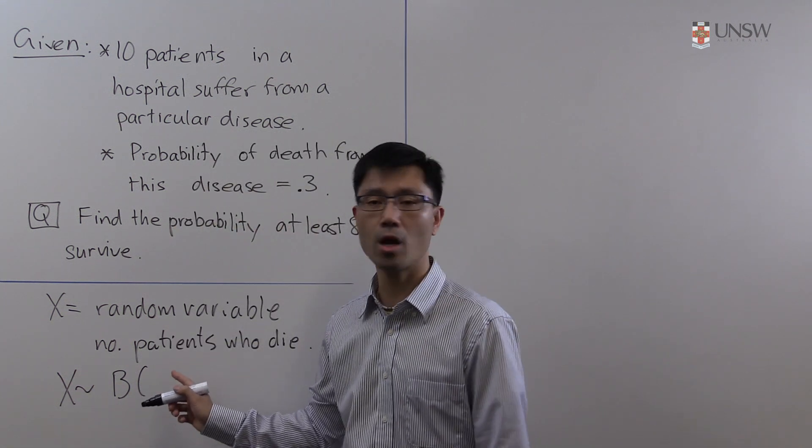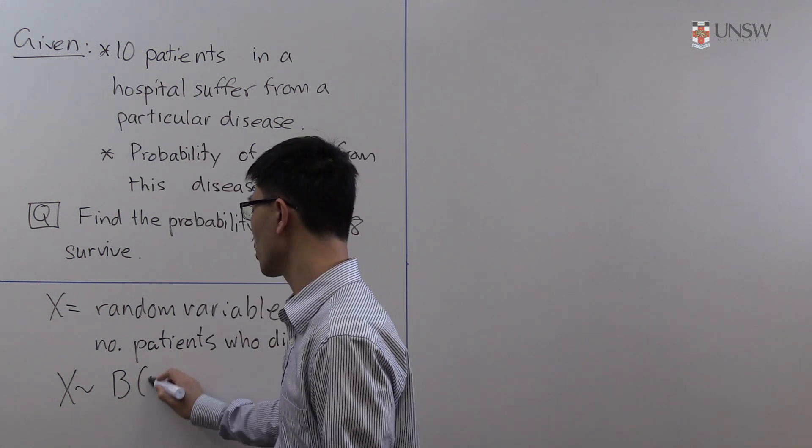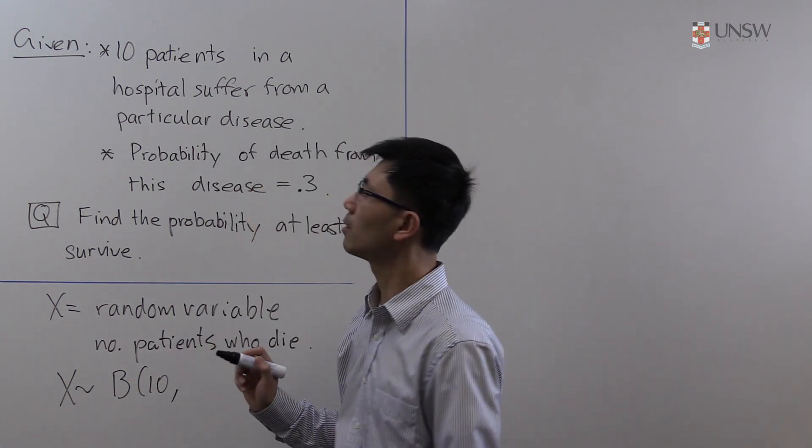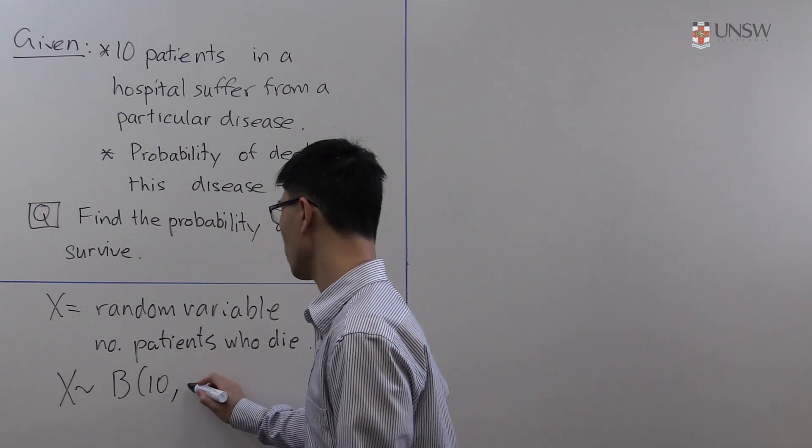The first parameter corresponds to the number of patients, 10, and the second one corresponds to the probability of dying, which is 0.3.